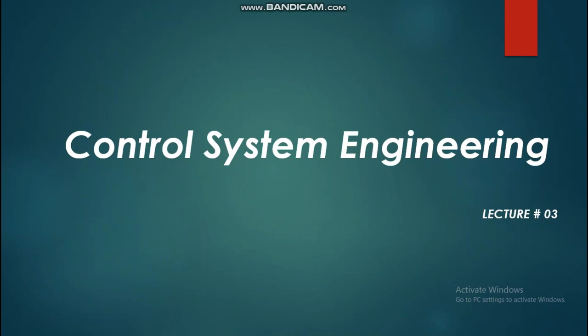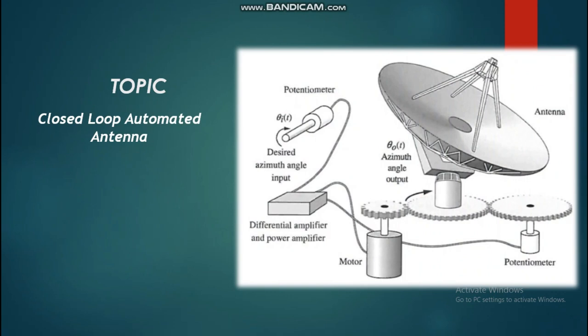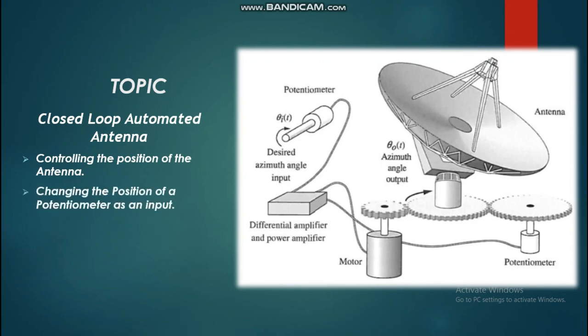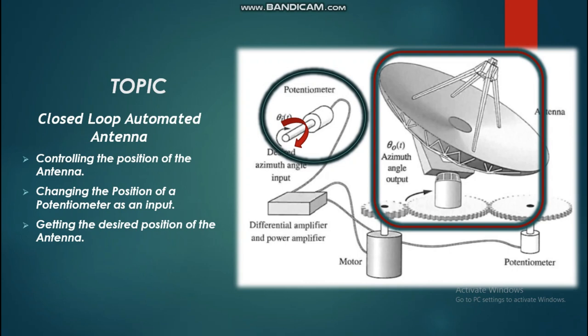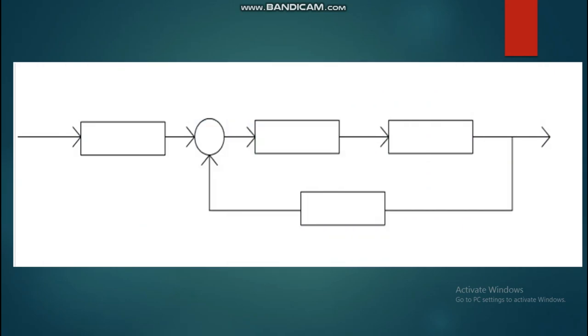Hello and welcome back. In the third lecture of control system engineering, we are going to talk about a closed-loop automated antenna control system. This system controls the position of an antenna by changing the position of a small potentiometer to our desired angle, resulting in the rotation of the large, heavy antenna to its desired position.